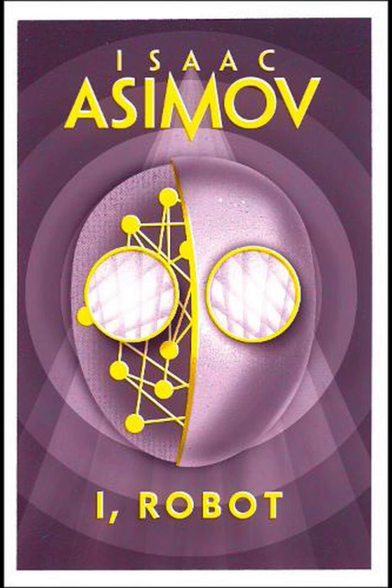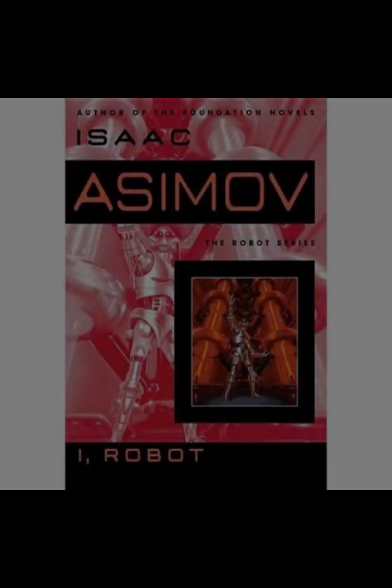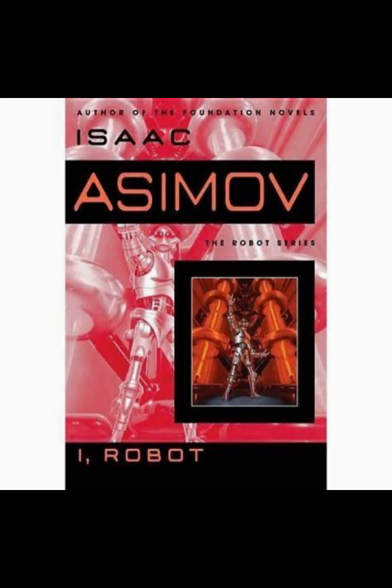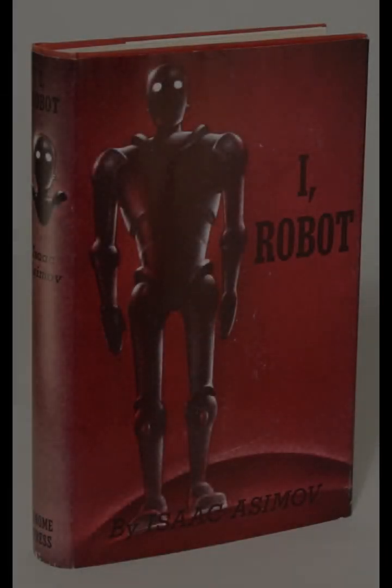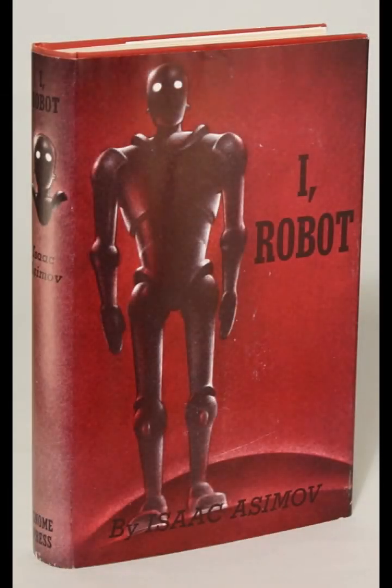These laws are not just a set of rules but serve as a thematic exploration of the potential and limitations of artificial intelligence. Each story in I, Robot addresses different scenarios where these laws come into play, revealing the complexities and unintended consequences that arise when artificial intelligence interacts with human values and behaviors.